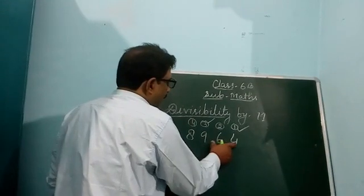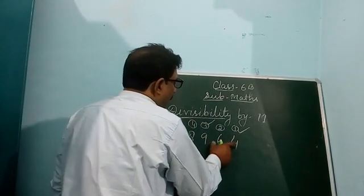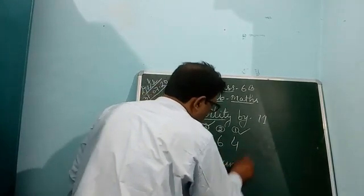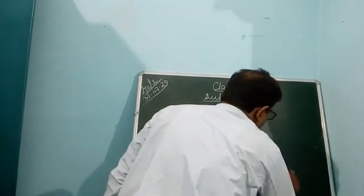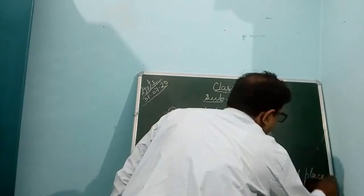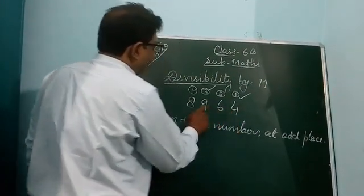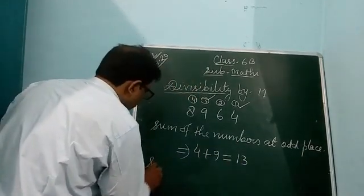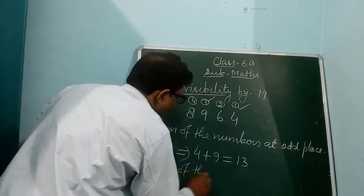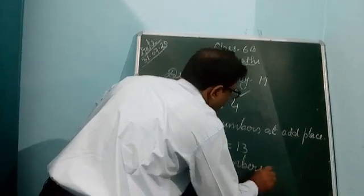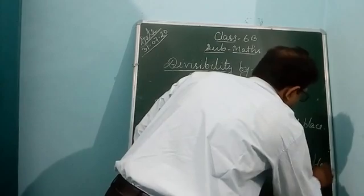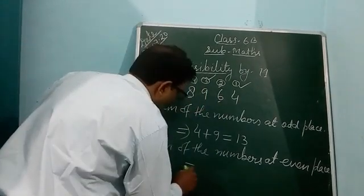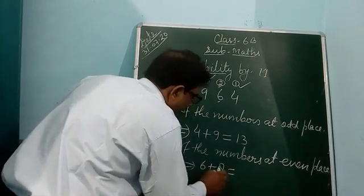So you add the odd places first. Odd places are 1 and 3, so add those digits: 4 and 9, giving 13. Next, sum of the digits at even places — positions 2 and 4. At even places we have 6 and 8, so 6 plus 8 equals 14.